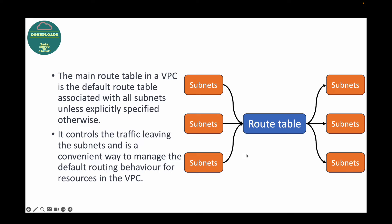The route table controls the traffic leaving the subnet and is a convenient way to manage the default routing behavior for resources in the VPC. Without the route table, your VPC will not be able to process your traffic. So the route table plays a very important role — it accepts the traffic and sends it to the respective subnets that you have defined.